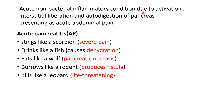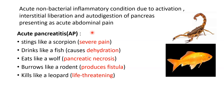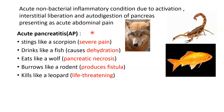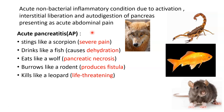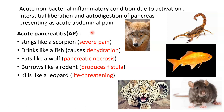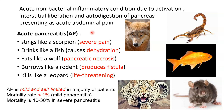A simple limerick to remember the most important signs and complications of this condition is that acute pancreatitis stings like a scorpion, drinks like a fish, eats like a wolf, burrows like a rodent, and kills like a leopard. Please remember that even though it is life-threatening, in the majority of patients it is mild and self-limited. The mortality rate is less than 1% in mild pancreatitis.